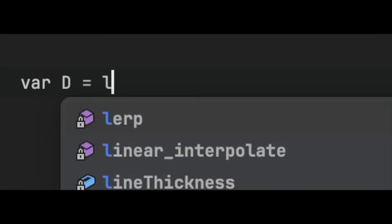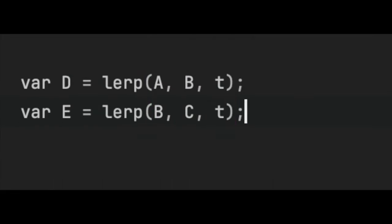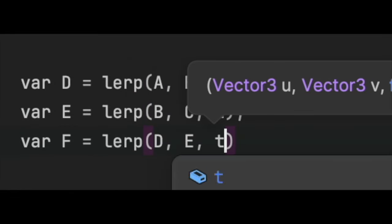So the position of D given t is simply LERP A, B, T. The position of E is LERP B, C, T. And lastly, F is LERP D, E, T. F is the Bezier curve. That's it.